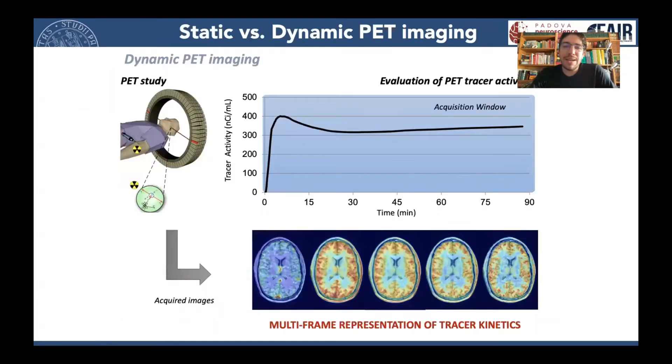Now, as Arianna nicely said in the introduction, when we perform a PET experiment, we inject a radiotracer, a radioligand, and we can then decide to follow it dynamically over time for FDG, usually in a period of 60 minutes, one hour, and then reconstruct multiple PET images that give you a multi-frame representation of what is happening to our tracer in the body. And that is called the dynamic PET framework.